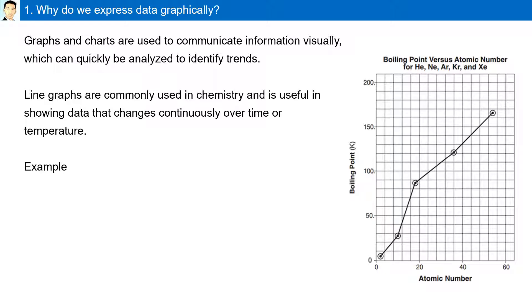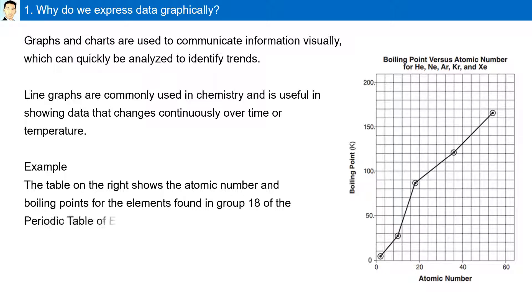For example, the table on the right shows the atomic number and boiling points of elements found in Group 18 of the periodic table. Analysis of the graph shows that as the atomic number increases, the boiling point increases.